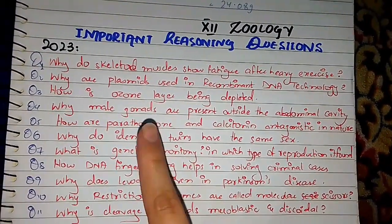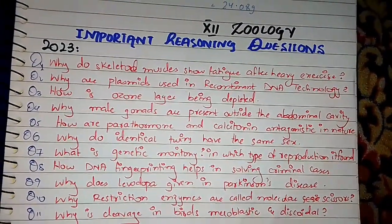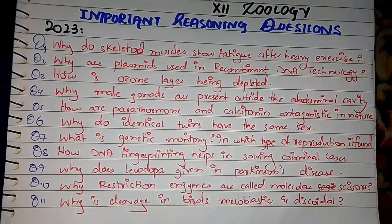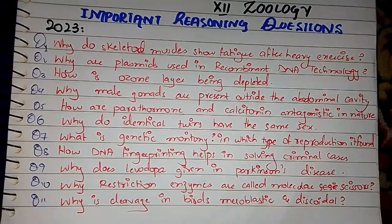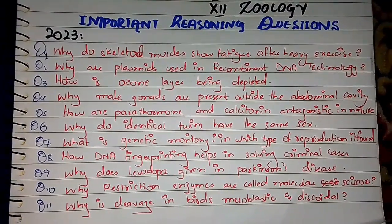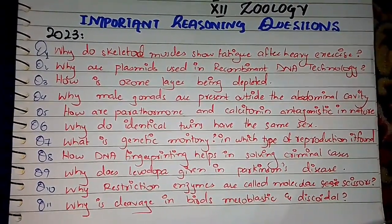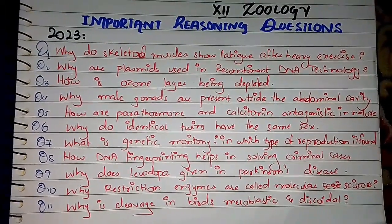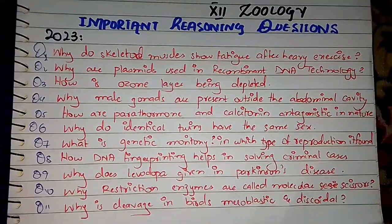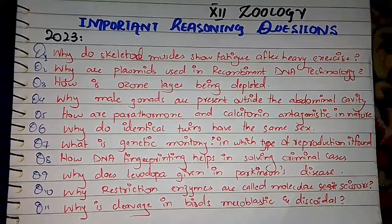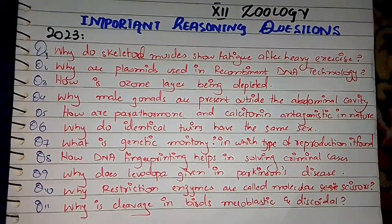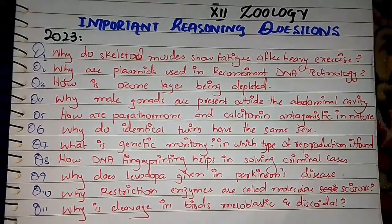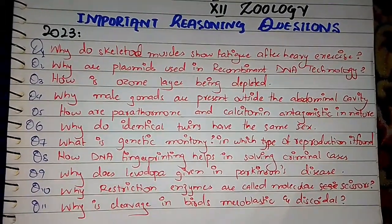Parathyroid hormone and calcitonin are antagonists in nature. Both work against each other. Parathyroid hormone is released when there is a low level of calcium in the blood.